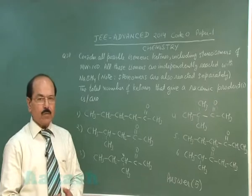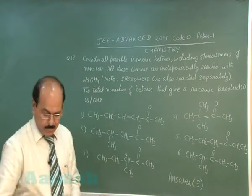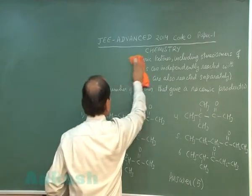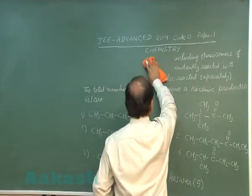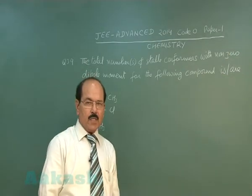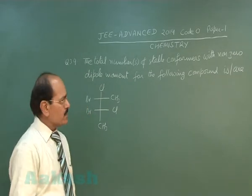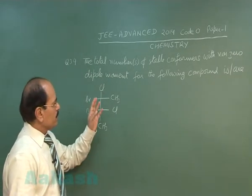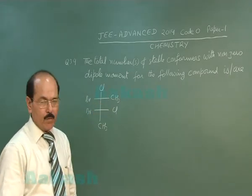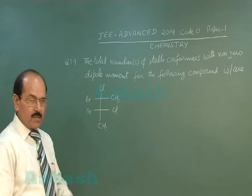Now we move on to the next question, that is question number 39. Question number 39 reads: the total number of stable conformers with non-zero dipole moment for the following compound.